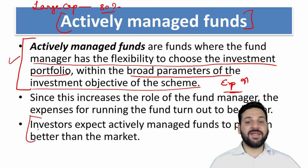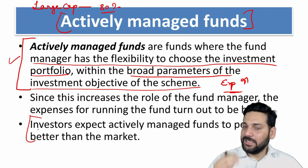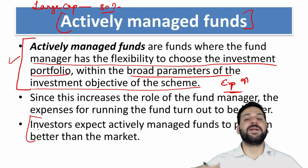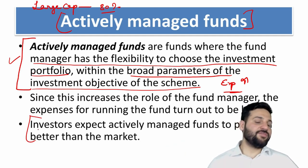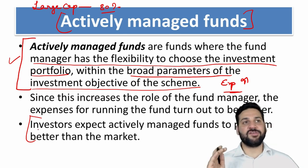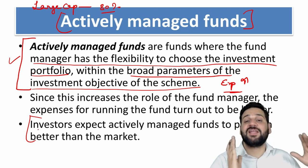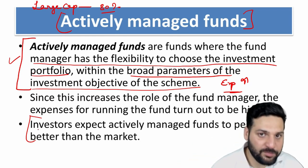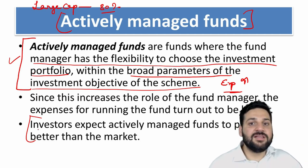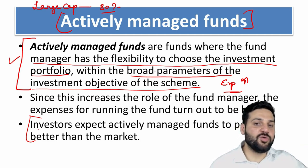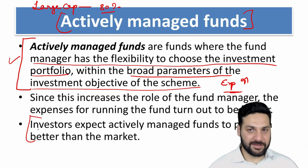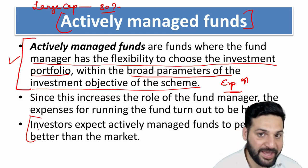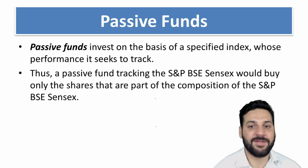Why are investors investing in actively managed funds? Because they are expecting this fund is going to perform better than the market. If somebody is investing in a large cap fund rather than an index fund, that person expects this particular fund is going to give better returns than the Sensex. That is why investors are choosing actively managed funds.